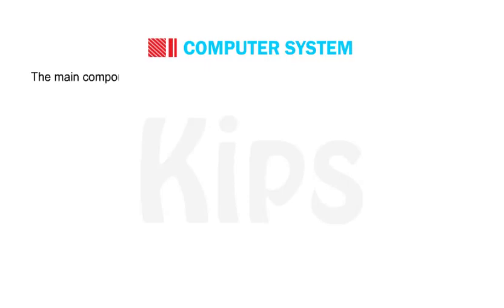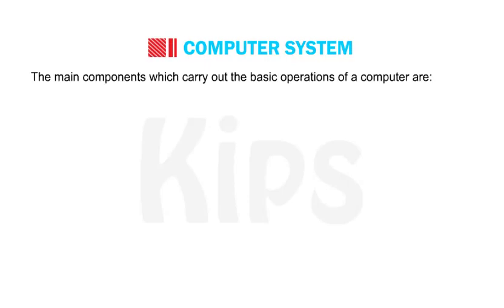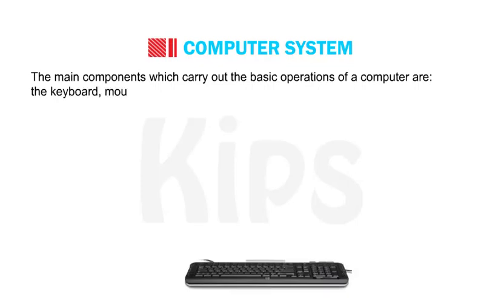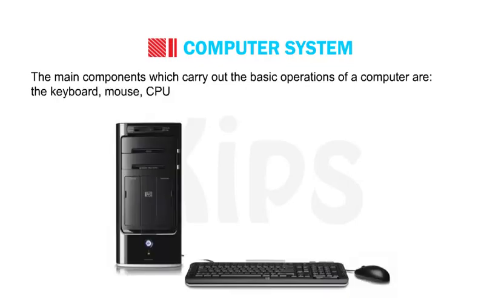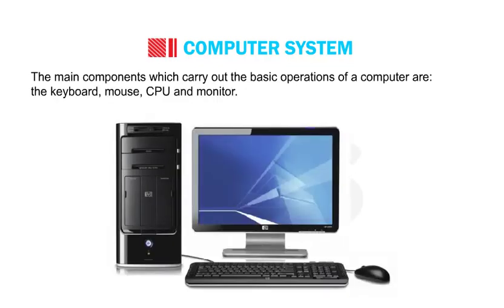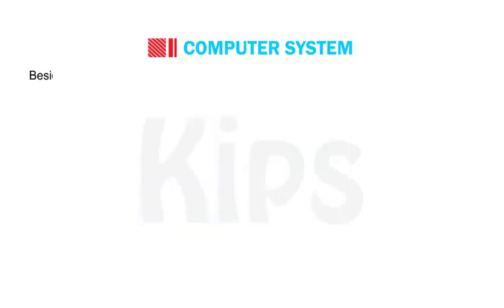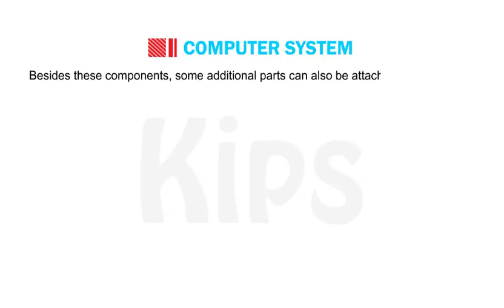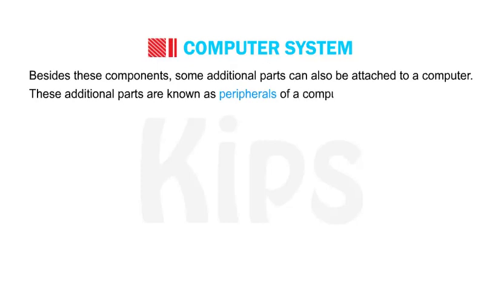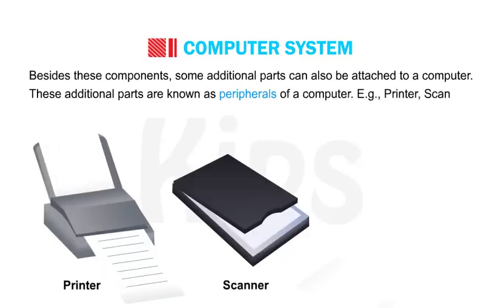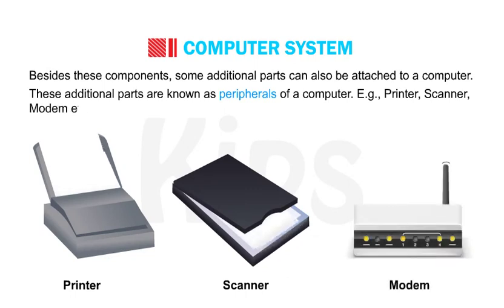The main components which carry out the basic operations of a computer are the keyboard, mouse, CPU and monitor. Besides these components, some additional parts can also be attached to a computer. These additional parts are known as peripherals of a computer. For example, printer, scanner, modem, etc.